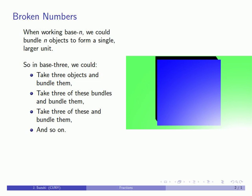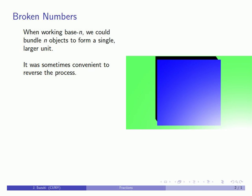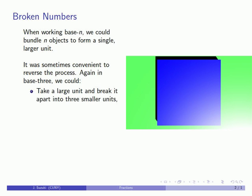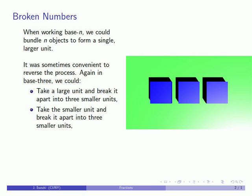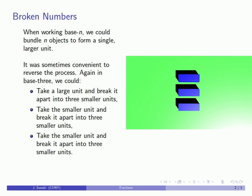As we saw when we did things like division or subtraction, it was sometimes convenient to reverse the process. We can take a large object and break it apart into 3 smaller objects, and we can take each of these smaller objects and break them apart into 3 even smaller objects. If we do that one more time, we'll get back to our single unit.